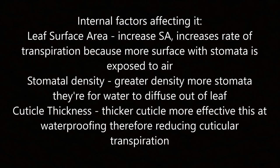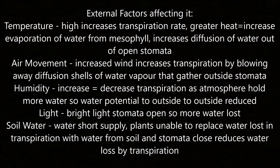Transpiration — internal factors: leaf surface area (greater surface area increases transpiration as more surface with stomata is exposed); stomatal density (greater density means more stomata for water to diffuse out); and cuticle thickness (thicker cuticle is more effective at waterproofing, reducing cuticular transpiration). External factors: temperature (higher temperature increases evaporation from mesophyll and diffusion out of stomata); air movement (wind blows away the diffusion shells of water vapour outside stomata, increasing transpiration); humidity (increased humidity decreases transpiration as the water potential outside is reduced); light (bright light causes stomata to open, so more water is lost); and soil water (when in short supply, plants cannot replace water lost, so stomata close to reduce water loss).